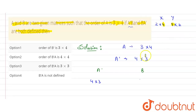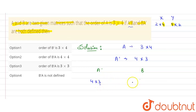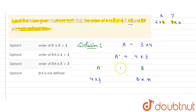Since A'B is defined, the number of columns in A' must equal the number of rows in B. So if we call that value n, the order of B will be n×(something). From the order of A' being 4×3, the inner matching value gives us the order of A'B.